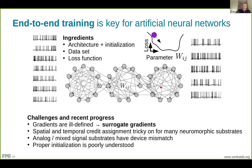There are important challenges but also exciting recent progress. One problem is that gradients are ill-defined, so we have to use surrogate gradients. Spatial and temporal credit assignment is often tricky for many neuromorphic substrates. Moreover, analog or mixed-signal substrates often have device mismatch, meaning if you train in simulation and then upload to hardware you run into trouble because RC circuits on the chip aren't exactly the same. Proper initialization is also poorly understood for spiking neurons.